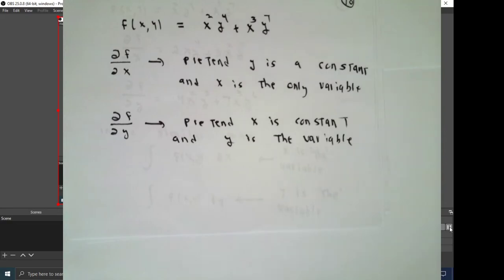When we write partial derivative of f with respect to x, we're going to pretend that y is a constant and x is the variable in the problem. When we write partial of f with respect to y, we're going to pretend that x now is a constant and it's the y that's the variable.